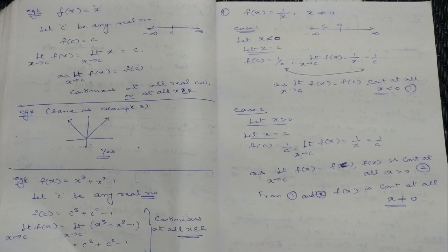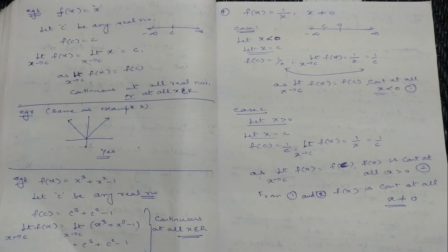Example 8: Discuss the continuity of f(x) = x³ + x² − 1. Let c be any real number. f(c) = c³ + c² − 1. We do not need to use the H-method here — directly use x = c. Limit as x→c of f(x) = limit as x→c of (x³ + x² − 1) = c³ + c² − 1. The f(c) and limit value are the same. Therefore, the function is continuous at all x ∈ ℝ.